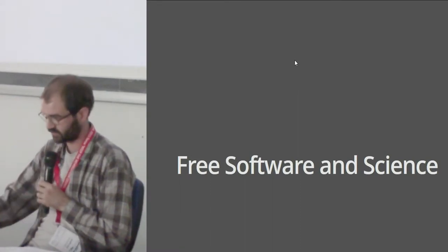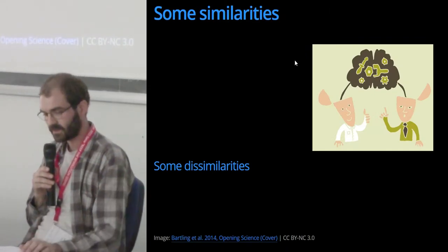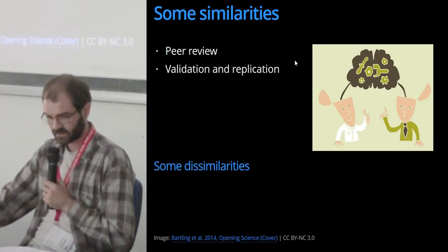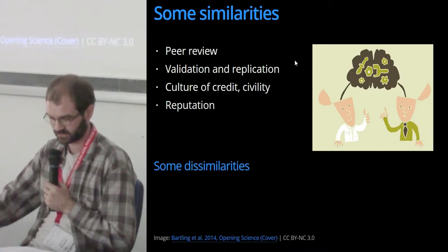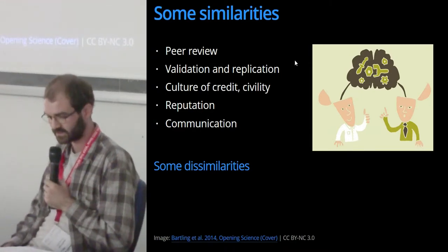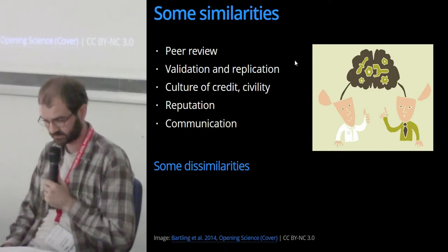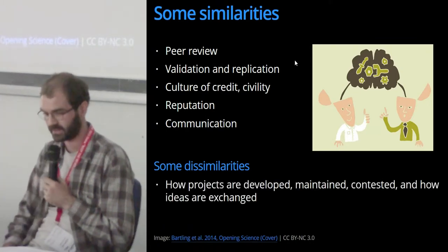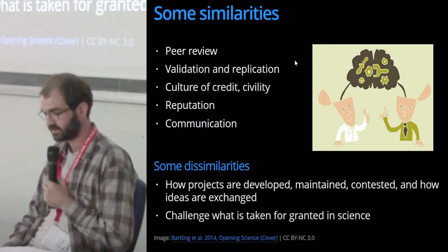After this look at the scientific community, I would like to move on to free software. Free software shares a lot of characteristics with science. Both have scrutiny and cumulative knowledge that can be seen in processes like peer reviewing, open data subject to validation and replication. In the free software community, like in science, there is a strong culture of credit and civility, reputation, and communication. But similarities between free software and science should not hide the differences. The similarities make it easier to compare both communities to better understand them and the way they are structured. Free software impresses due to the size of projects, indirect cooperation with people all around the world, the way projects are developed, maintained, contested, and how ideas are exchanged. And these dissimilarities in return challenge what is taken for granted in science.